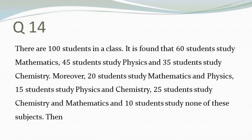It's given that 20 students study both math and physics, 15 study both physics and chemistry, and 25 study both chemistry and math. It is also given that 10 students study none of these three subjects.